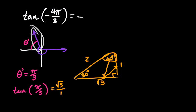And so therefore, the tangent of negative 4 pi over 3 is negative square root of 3. And that's it. Have a great day. Thank you.